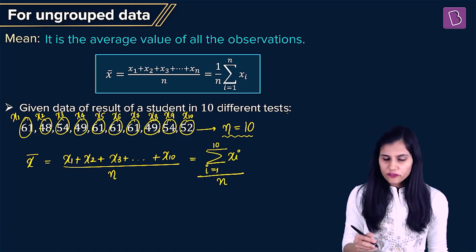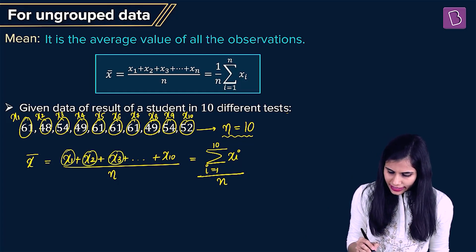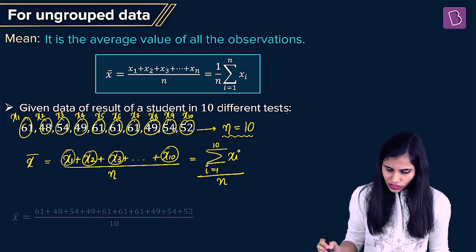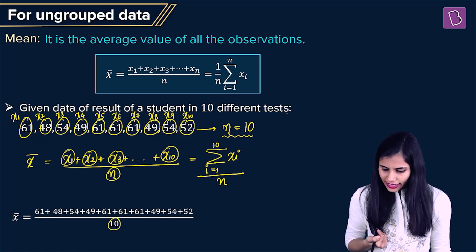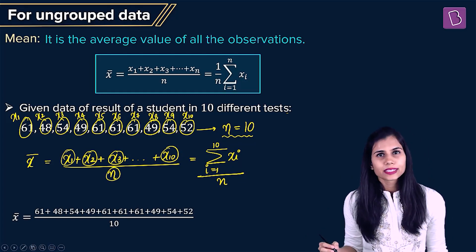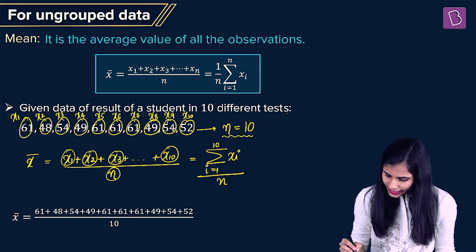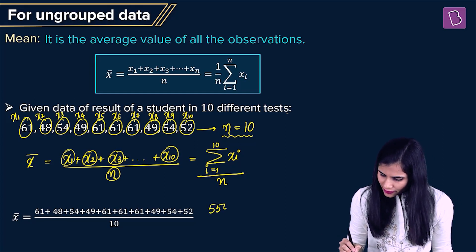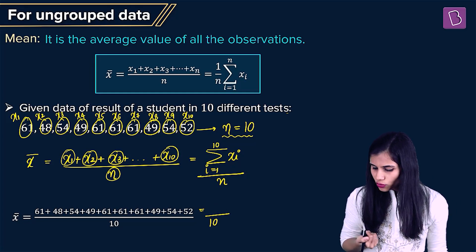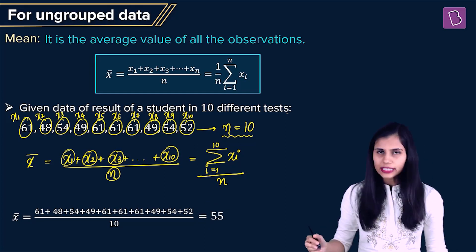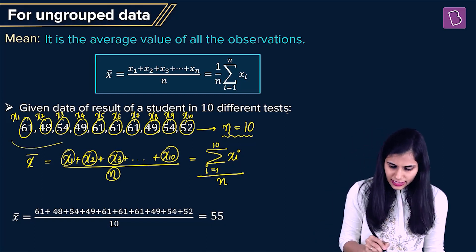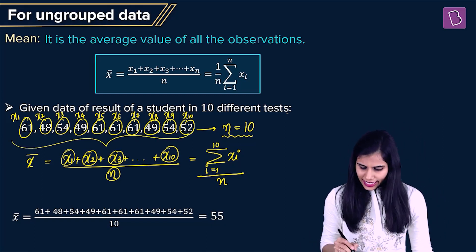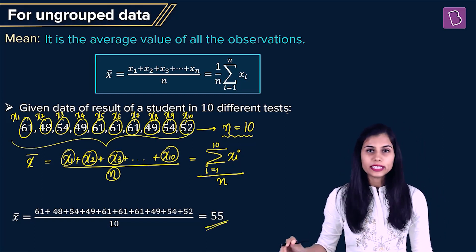Plug in the values of each of these 10 observations in the numerator and plug in the value of n as 10 in the denominator. When you solve this, you end up getting 550 in the numerator and 10 in the denominator, leaving you with 55 as the final answer. So the mean of this raw data set is 55.